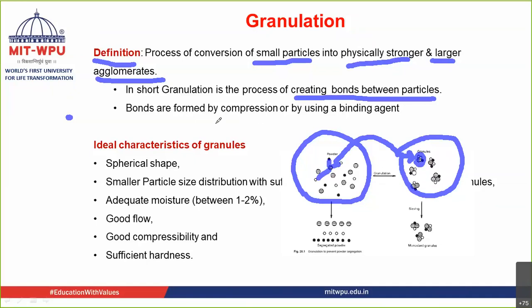How are the bonds formed? Bonds can be formed by two ways: by the method of compression, or with the help of a binding agent — the binders added in the formulation. By adding the binding agent, a bond is formed, or just because of compression, as we see in dry granulation technique. So there are two methods: compression and binding.